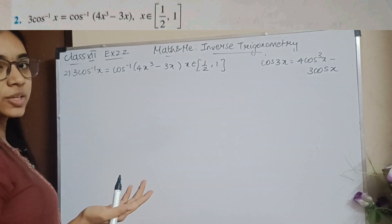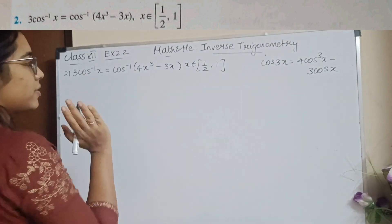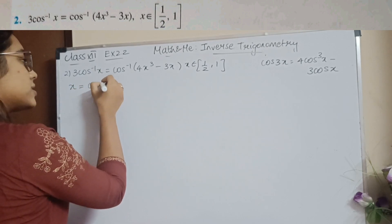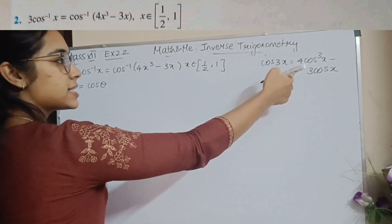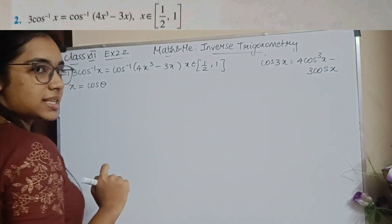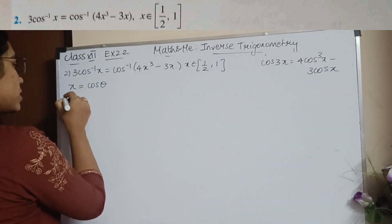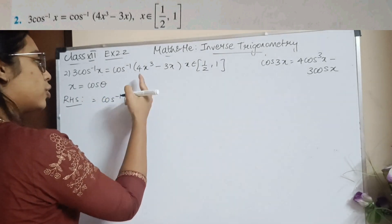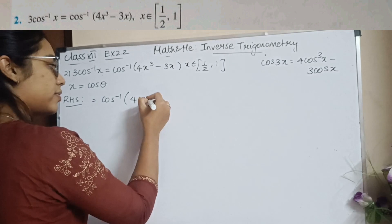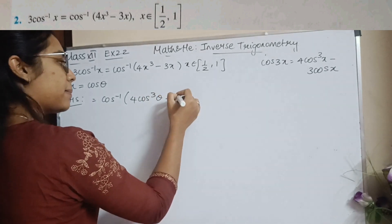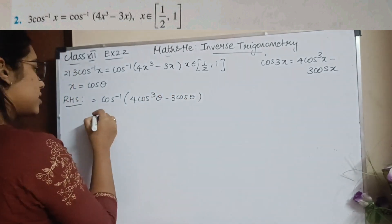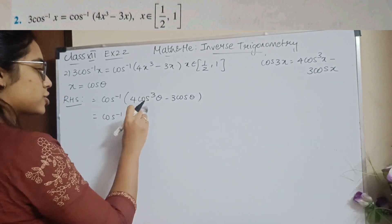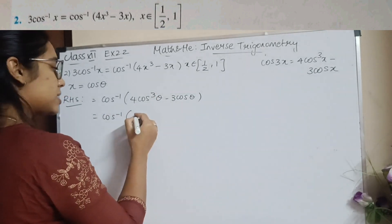Question 2 is very similar to the previous question except sine is replaced by cosine. So I make the substitution x = cosθ. We know cos(3θ) = 4cos³θ - 3cosθ. The RHS becomes cos⁻¹(4cos³θ - 3cosθ), which is cos⁻¹(cos3θ).